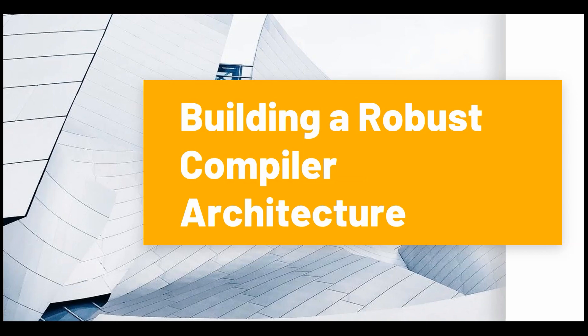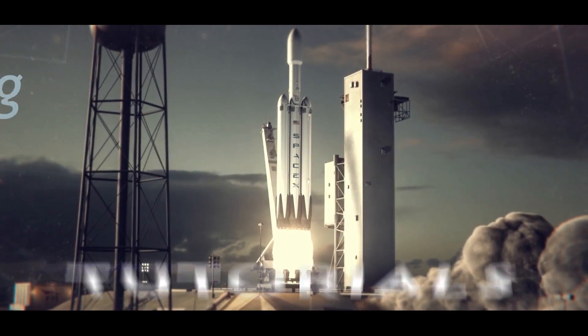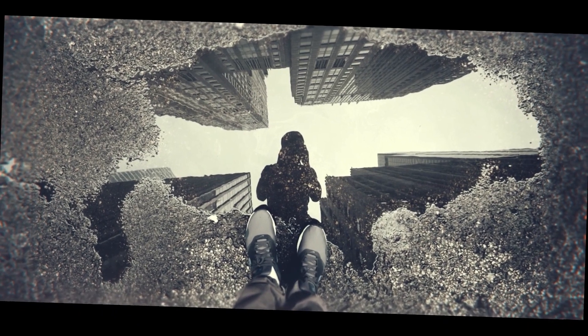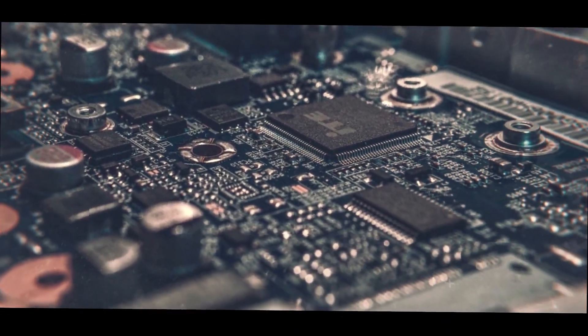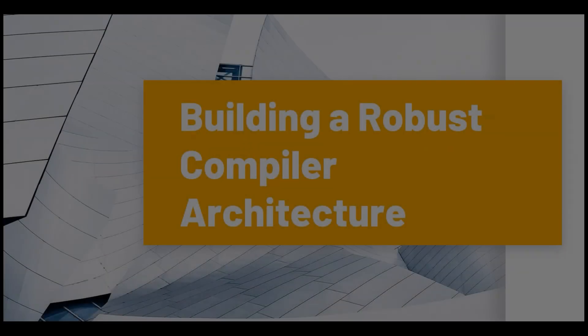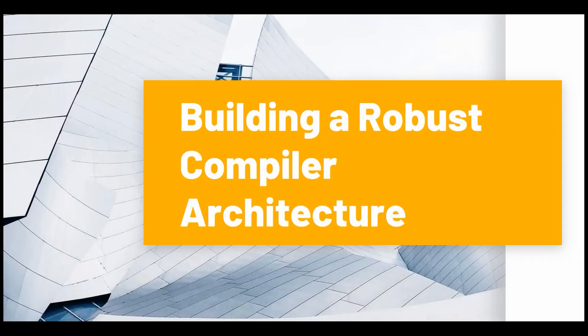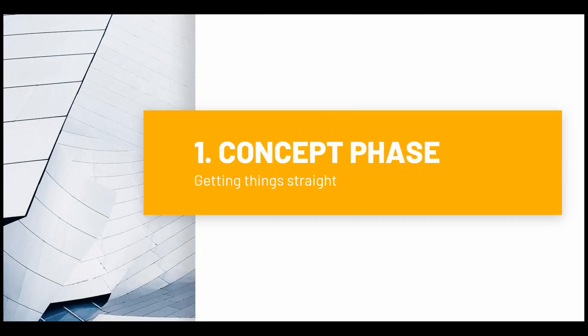So let's get right into it. We're going to be talking about how to build a robust compiler. This video is going to be subjective in the sense that this is how I'm building my compiler, but you can definitely use this as a blueprint for building your own compiler as well, because pretty much almost any compiler out there is built around this system. There are a couple different phases - let's start with the concept phase.